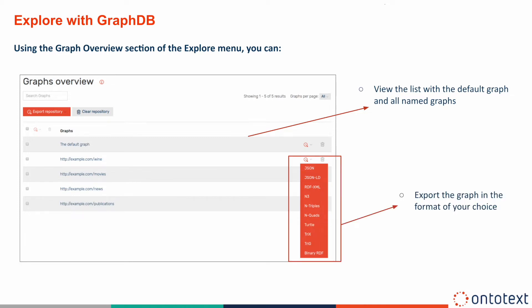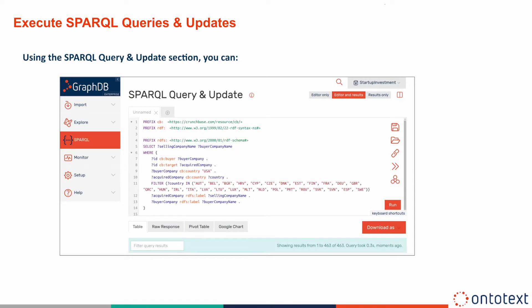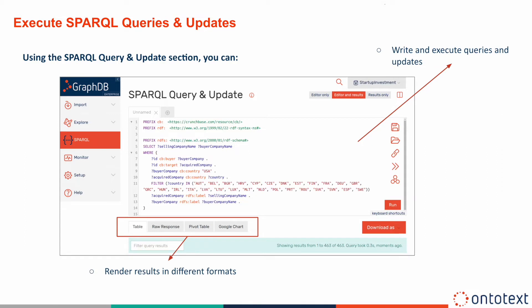Now let's look at executing queries with GraphDB Workbench. The SPARQL menu takes you directly to a syntax-directed SPARQL query and update editor, where you can write and execute your queries. It also allows you to render your query results as Table, Raw Response, Pivot Table, or Google Chart, and download them in different formats like JSON, XML, CSV, and others.